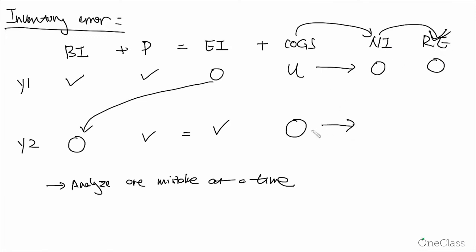Then let's look at year two. Cost of goods sold is overstated. As we just talked about, it has an understated net income because of the negative relationship between cost of goods sold and net income.